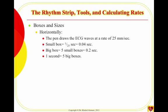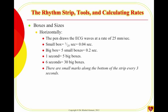A six-second rhythm strip equals 30 big boxes. On the ECG strip there are small tick marks at the bottom every three seconds. If you have three marks, that gives you two periods of three seconds, totaling six seconds. That six-second period is what we use for the quick calculation of heart rate. Vertically, each small box equals one millimeter or one millivolt.